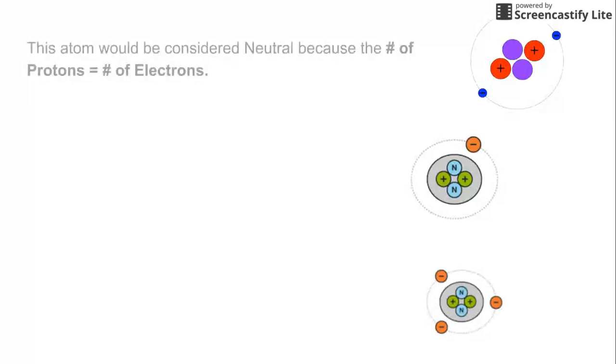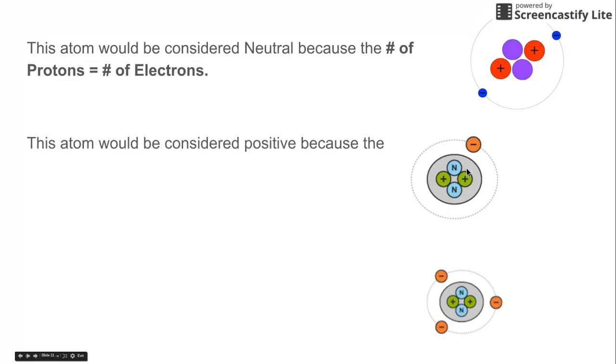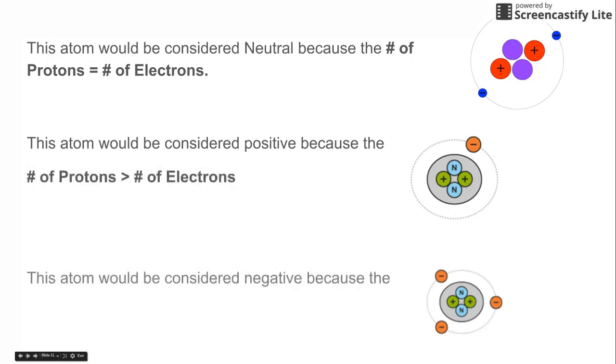So if you were to look at this, this atom would be considered neutral because the number of protons, or these positively charged subatomic particles, is equal to the number of electrons. This atom would be considered positive because you'll notice that there's two positives and a negative. And this atom would be considered negative because there's only two positives and there's three negatives surrounding it.